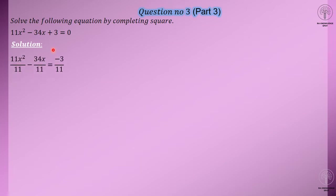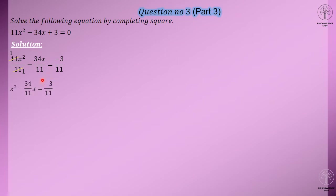So what do we have to do? First, you have to shift the constant number — which is positive — to the other side, where it will be negative. You can do this in one step or two steps. Now, since 11 is not a perfect square, you have to divide the whole equation by 11: 11 by 11, 34 by 11, and minus 3 by 11. After cancellation, you get x squared minus 34x by 11 equals minus 3 by 11.